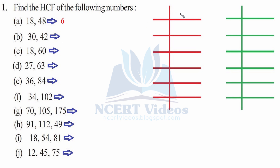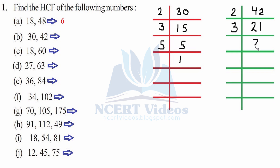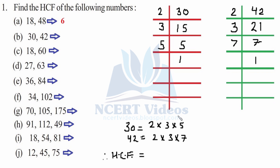Part b: for 30 and 42. First we do the prime factorization for 30: two fifteens are 30, three fives are 15, five ones are five. For 42: three sevens are 21, seven ones are seven. Writing the factors, the common among them is 2 and 3. Therefore the HCF would be 2×3 = 6. That was your part b.